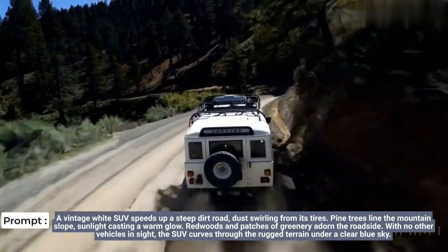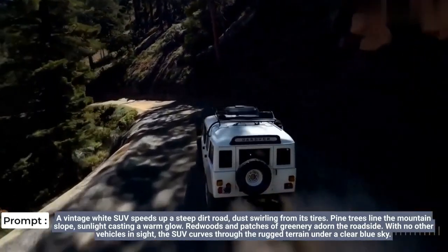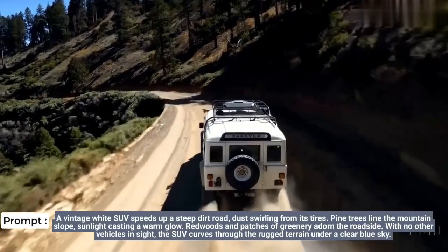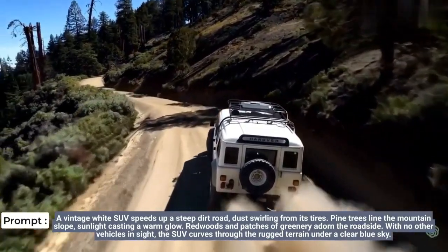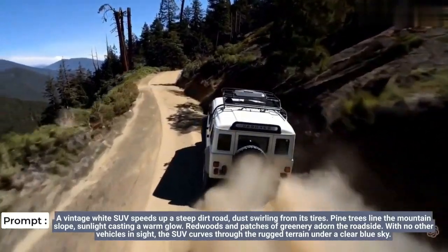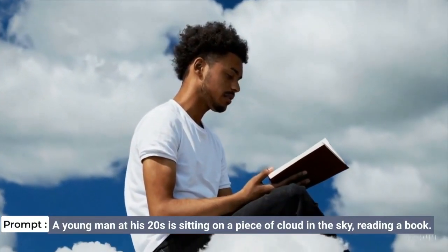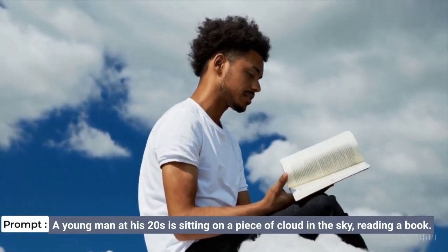Imagine being able to generate a video not by filming or animating, but by simply typing a description. That's exactly what Sora does. Powered by machine learning, it takes text prompts and transforms them into stunning visual stories, maintaining exceptional visual quality and fidelity to the user's prompts. This cutting-edge model is capable of generating complex scenes with multiple characters, each moving and interacting in ways that breathe life into the text.